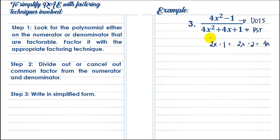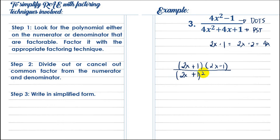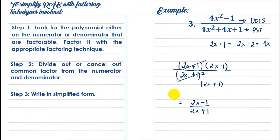Factoring the numerator using DOTS: square root of 4x squared is 2x, square root of 1 is 1, giving (2x plus 1)(2x minus 1). Factoring the denominator as a PST: (2x plus 1) squared, meaning two factors of 2x plus 1. The common factor 2x plus 1 cancels, leaving one 2x plus 1 in the denominator. The final answer is 2x minus 1 all over 2x plus 1.